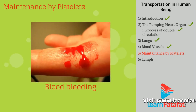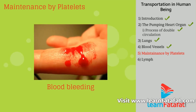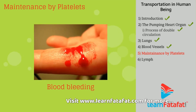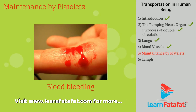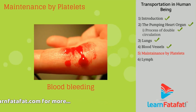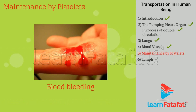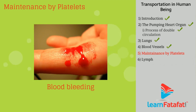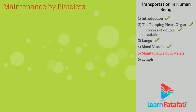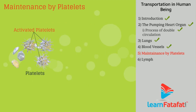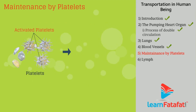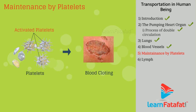In case of injury, blood vessels get damaged and start bleeding. If bleeding is not stopped, it may lead to loss of blood and reduction in blood pressure. To avoid this, blood contains platelet cells that stick to the damaged area and form a clot that helps stop bleeding.